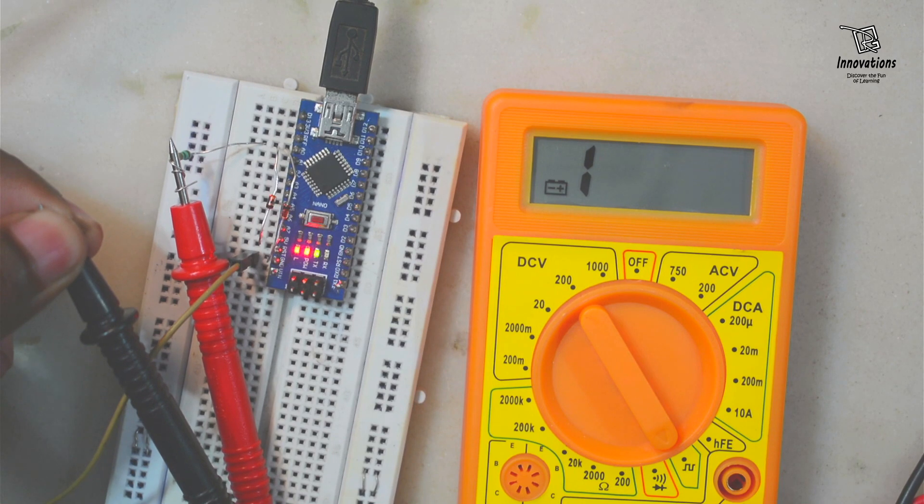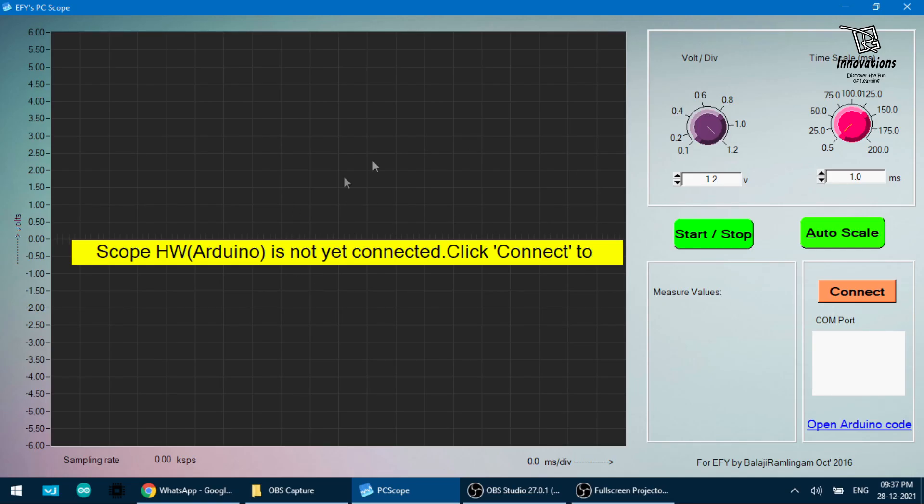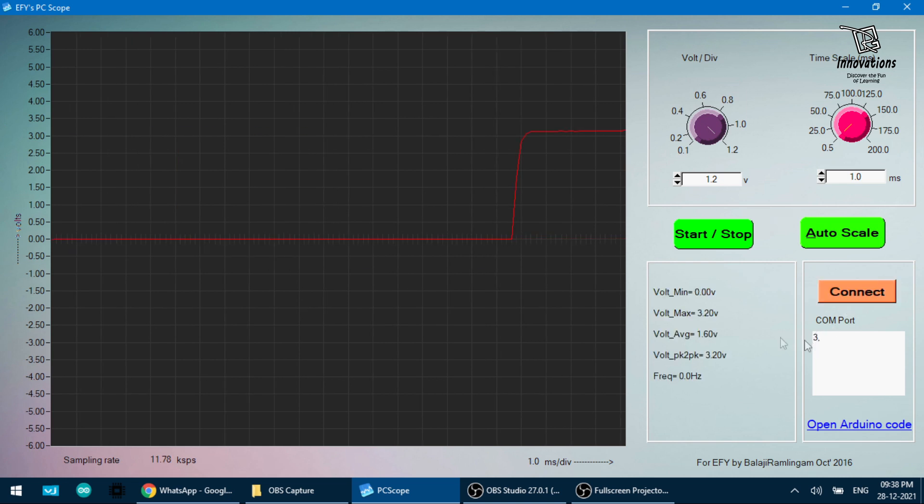Now let's check what is happening on the screen. Here is the oscilloscope screen. It looks like a DSO or digital storage oscilloscope. First, we need to connect the oscilloscope software with the Arduino. So we are pressing connect here. It's connected and we can see some graph is moving there, but it's too big for us to understand. So I am pressing auto scale.